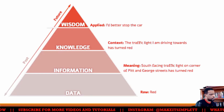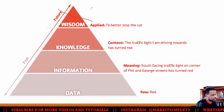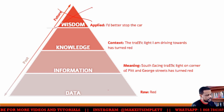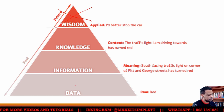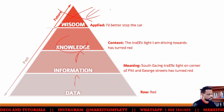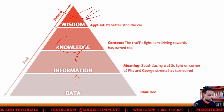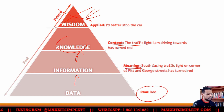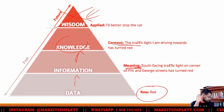So for our purposes, we care more about data, information, and knowledge. Knowledge is where you form some sort of conclusion; information is where you get meaning; and raw data is the starting point.